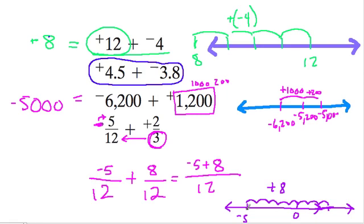Because we're going from negative 5. So up 5 brings us to 0, and then another 3 brings us to positive 3. So positive 8 plus negative 5, that's 3. So it's 3 over 12, or 1 over 4.